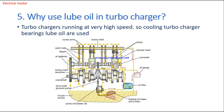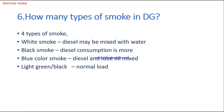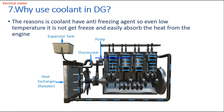Fifth question: why do we use lube oil in the turbocharger? The turbocharger fans run at very high RPM, so their temperature becomes very high. The bearings connected to these fans also produce a lot of heat, so we use lube oil to cool the turbocharger bearings. Sixth question: how many types of smoke are there in a diesel generator? There are four types: white smoke — diesel may be mixed with water; black smoke — diesel consumption is excessive; blue smoke — diesel and lube oil are mixed; light green or light black smoke means the generator is working under normal load.